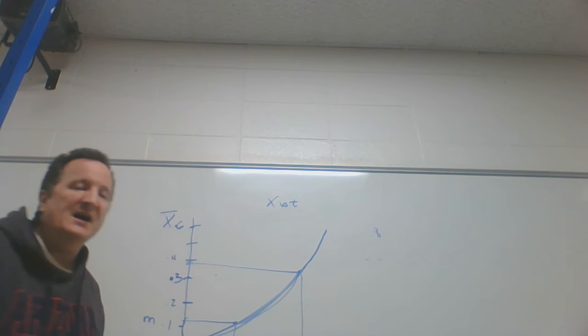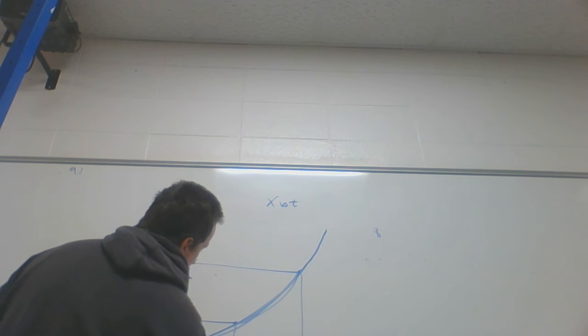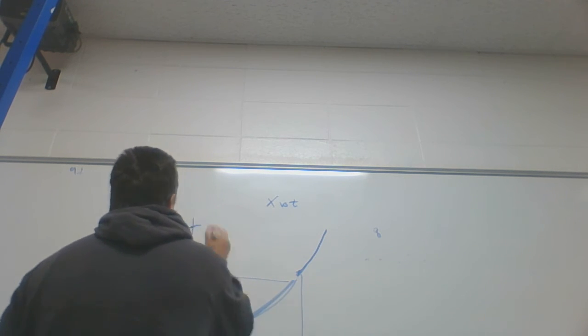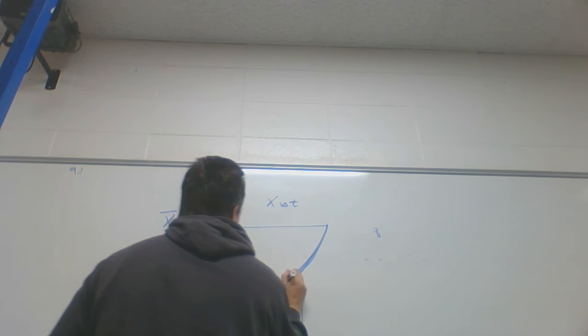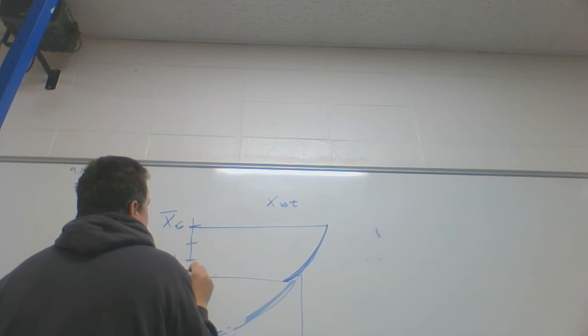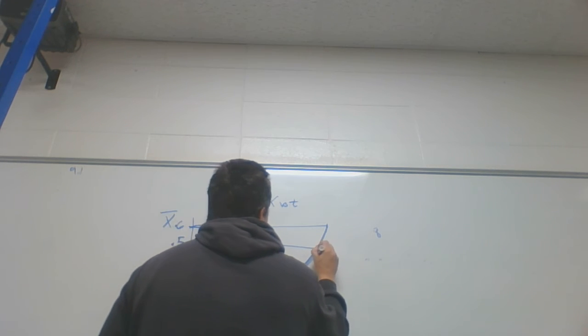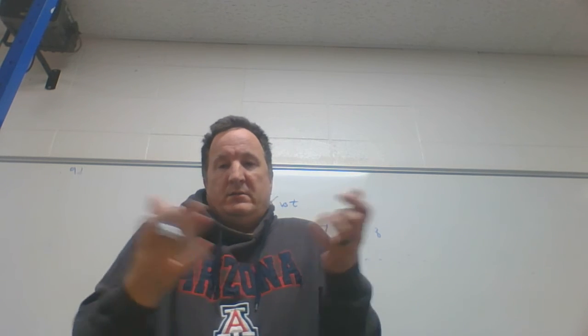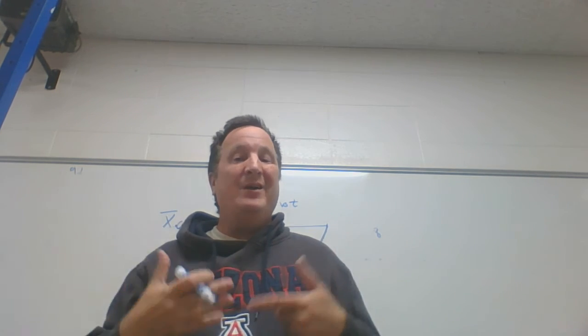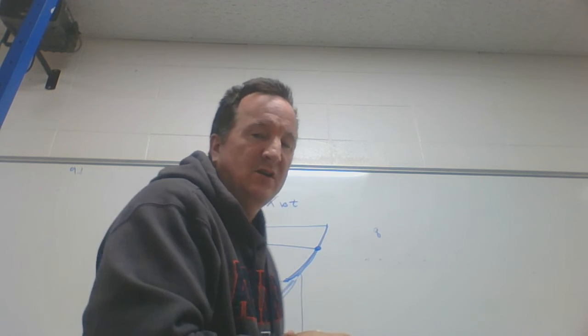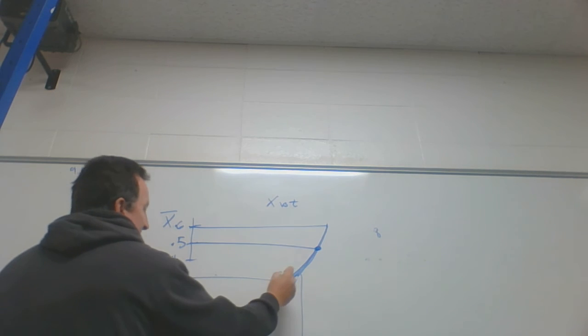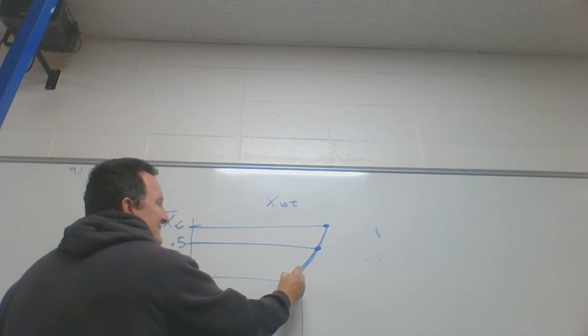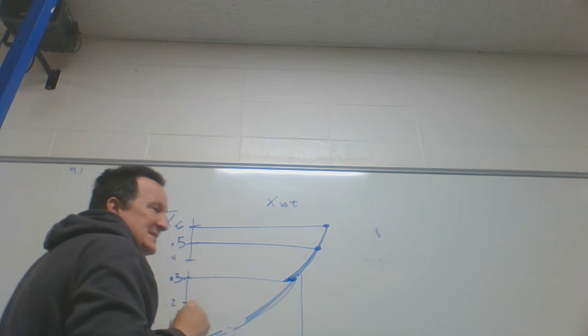So the question is, how do I find somewhere between, let's say, 0.3 and 0.6? Let's say I want to find the instantaneous velocity at 0.5 meters. I want to find the velocity at that instant in time. I don't have any time interval, so I have to devise a way to do that. I can find the average between 0.6 and 3, but I can't find the instantaneous velocity unless I do something different.